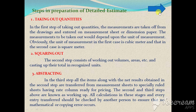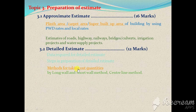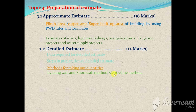The two methods for taking out quantities for load-bearing structures are: first, the long wall and short wall method, also called the in-to-in and out-to-out wall method, which will be described in the next video; and second, the centerline method. These will be covered in the upcoming video.